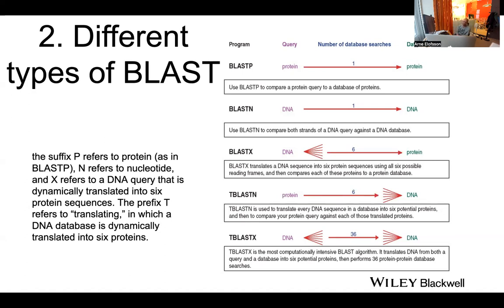You can even do DNA-to-DNA searching but in the protein space using TBLASTX, which is much more computationally expensive because you need to do six times six comparisons. The advantage compared to using just BLASTN is that protein searches are much more sensitive than DNA or RNA searches.